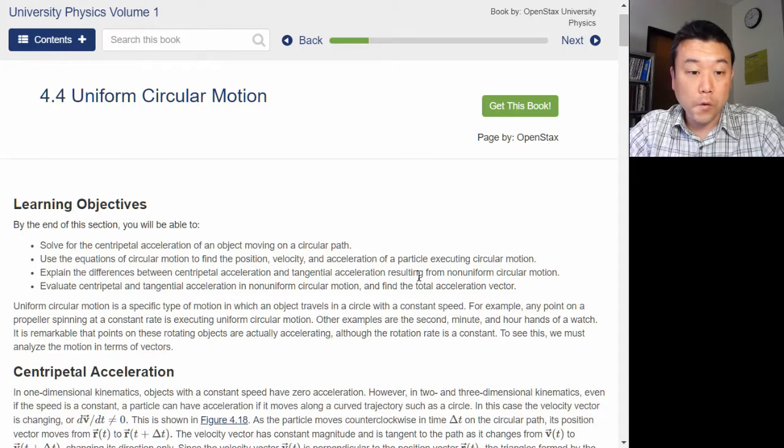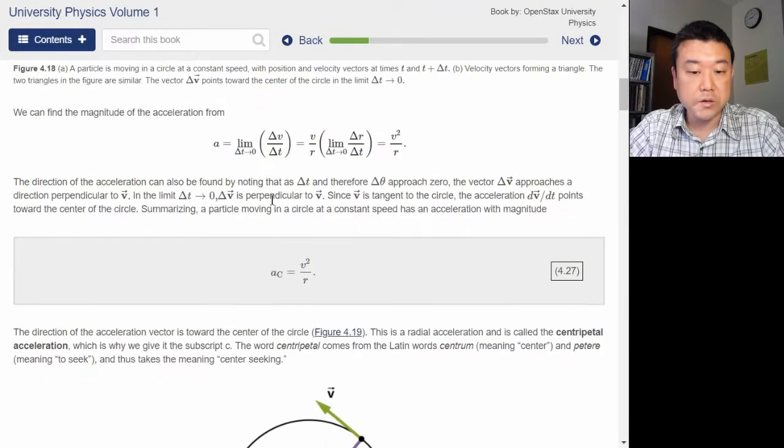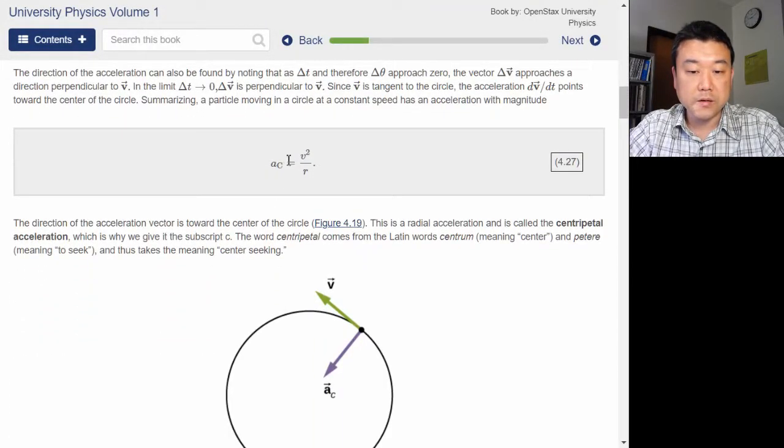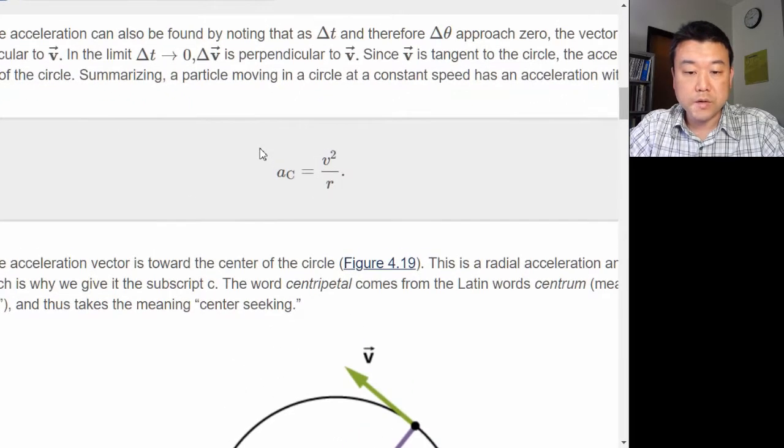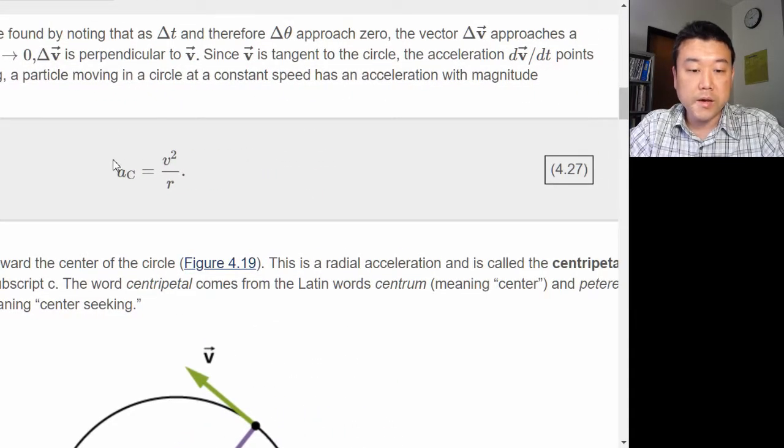In section 4.4, your textbook covers uniform circular motion, and the key result in the section is the derivation of centripetal acceleration in terms of the speed of the uniform circular motion and the radius of curvature r of the circle being traversed.